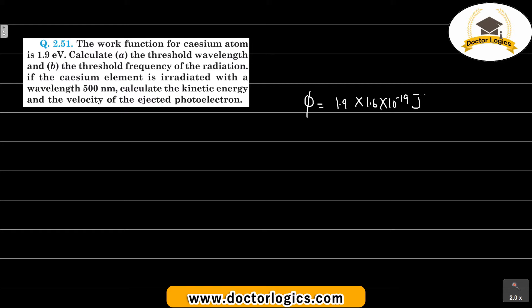Calculate the threshold wavelength. Threshold wavelength: work function is hc by lambda 0. Lambda 0 is the threshold wavelength, work function equals hc by lambda 0.